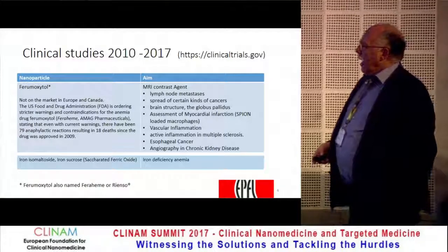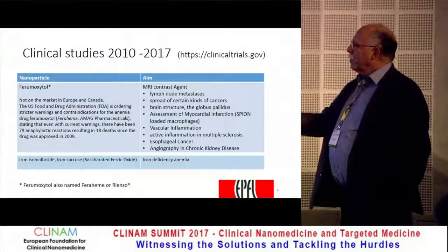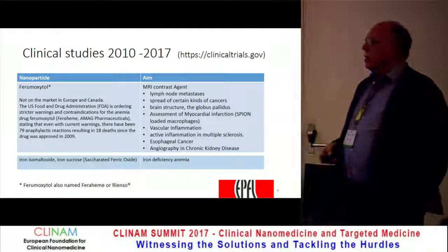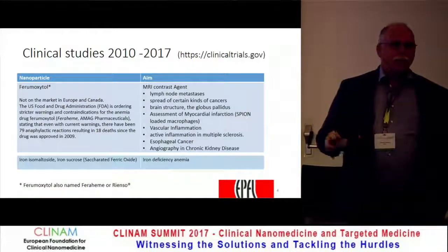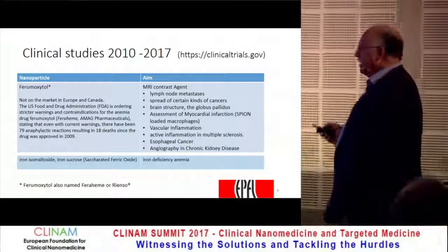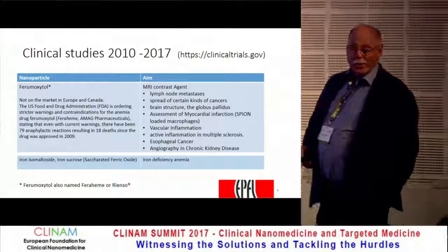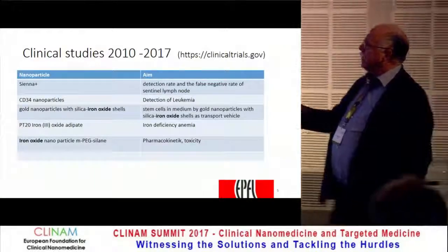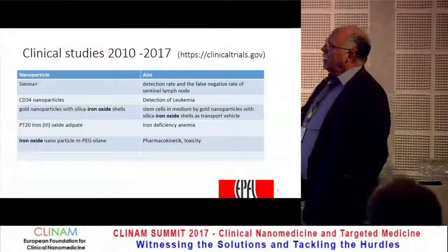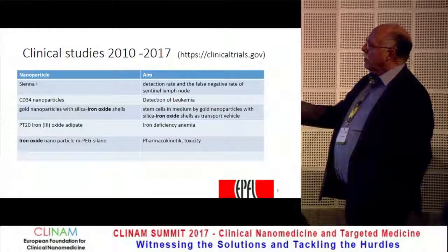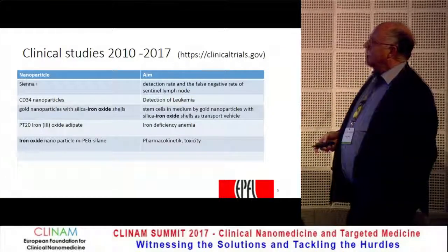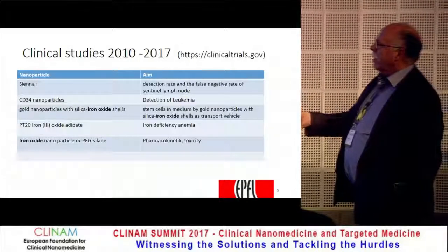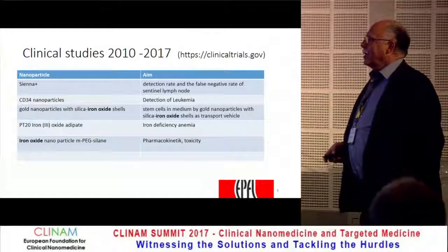Then we have iron isomaltose and others, which are more used for iron-deficiency anemia. This is also a somewhat strange situation: they are called iron sucrose, even though they contain iron oxide nanoparticles of 4 nanometers with a coating around, but you don't find them listed under iron oxide nanoparticles in the literature. We also have other particles — Sienna for detection of false-negative rates of sentinel lymph nodes — and others for detection of leukemia, gold nanoparticles with silica iron oxide shells, complex particles, and particles for stem cell detection and tracking, as well as particles for pharmacokinetics and toxicity.